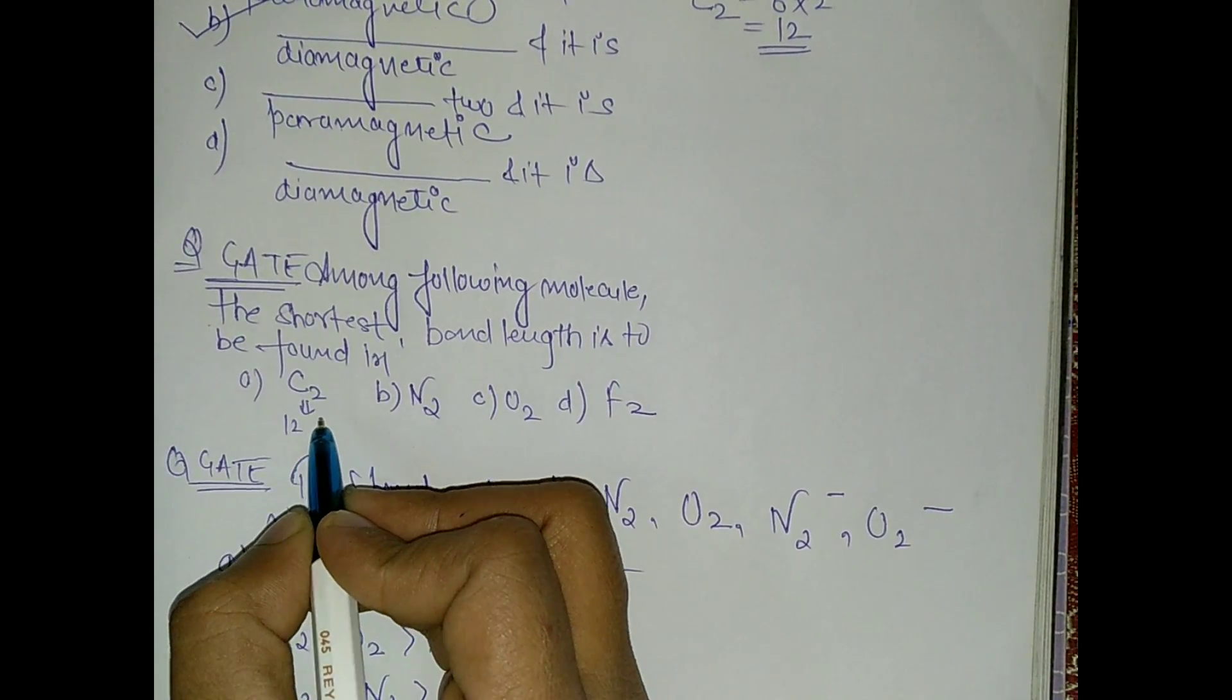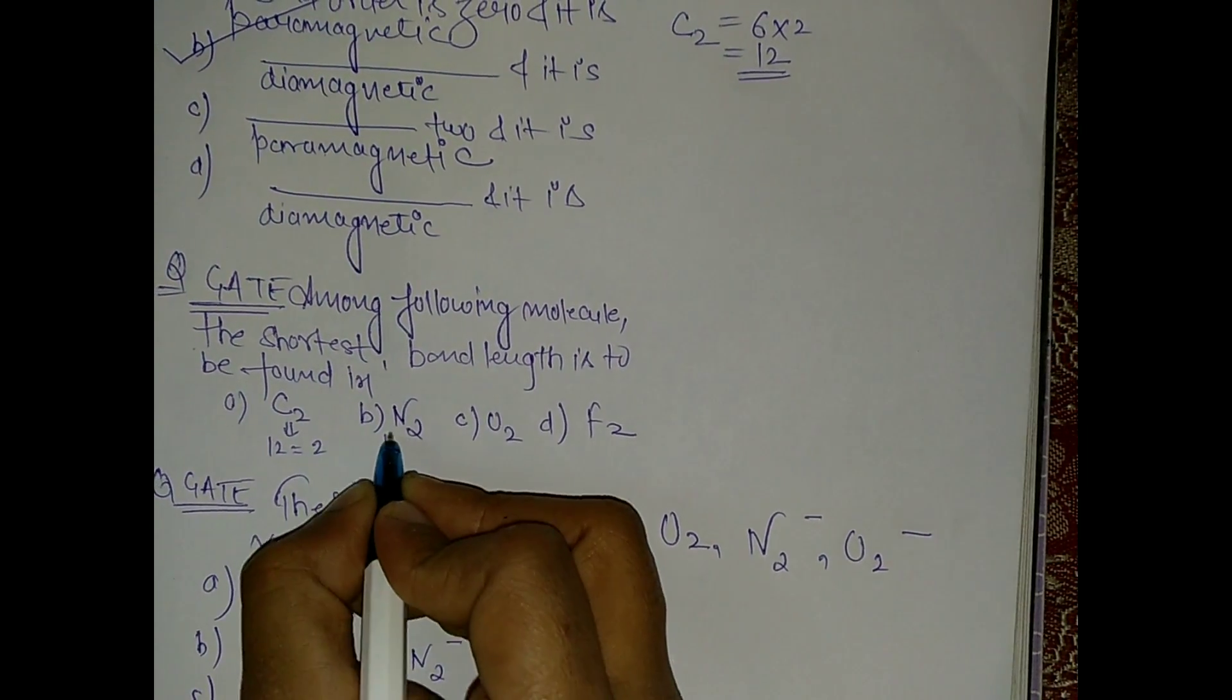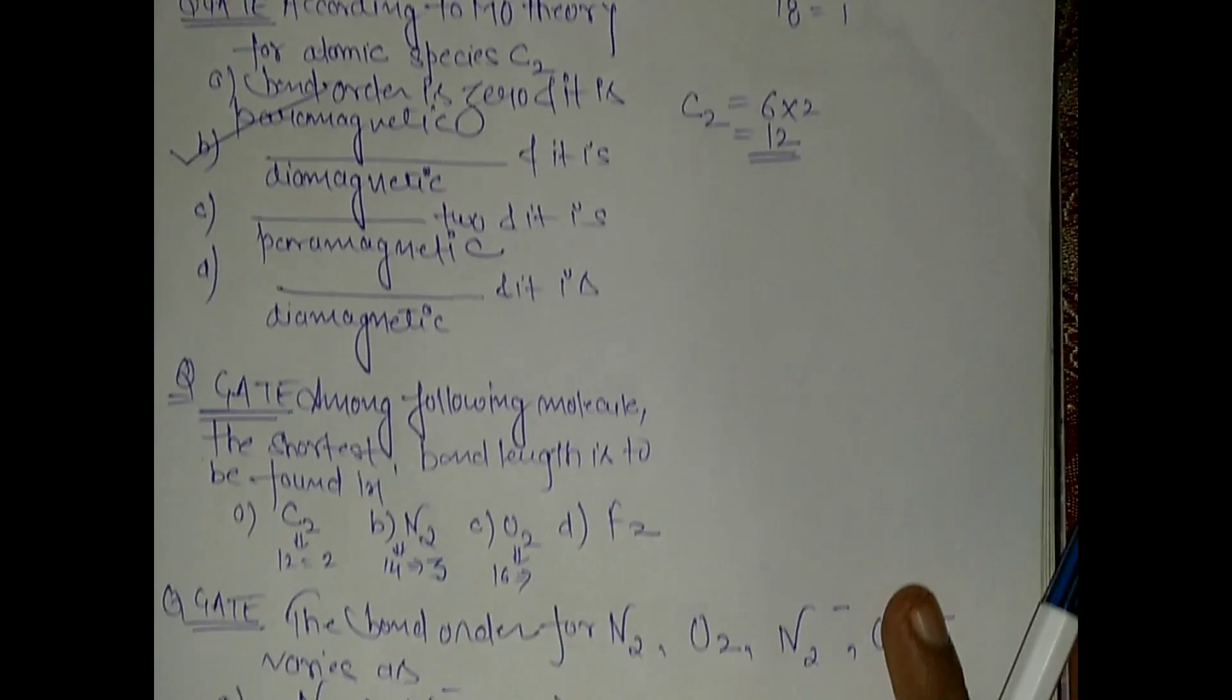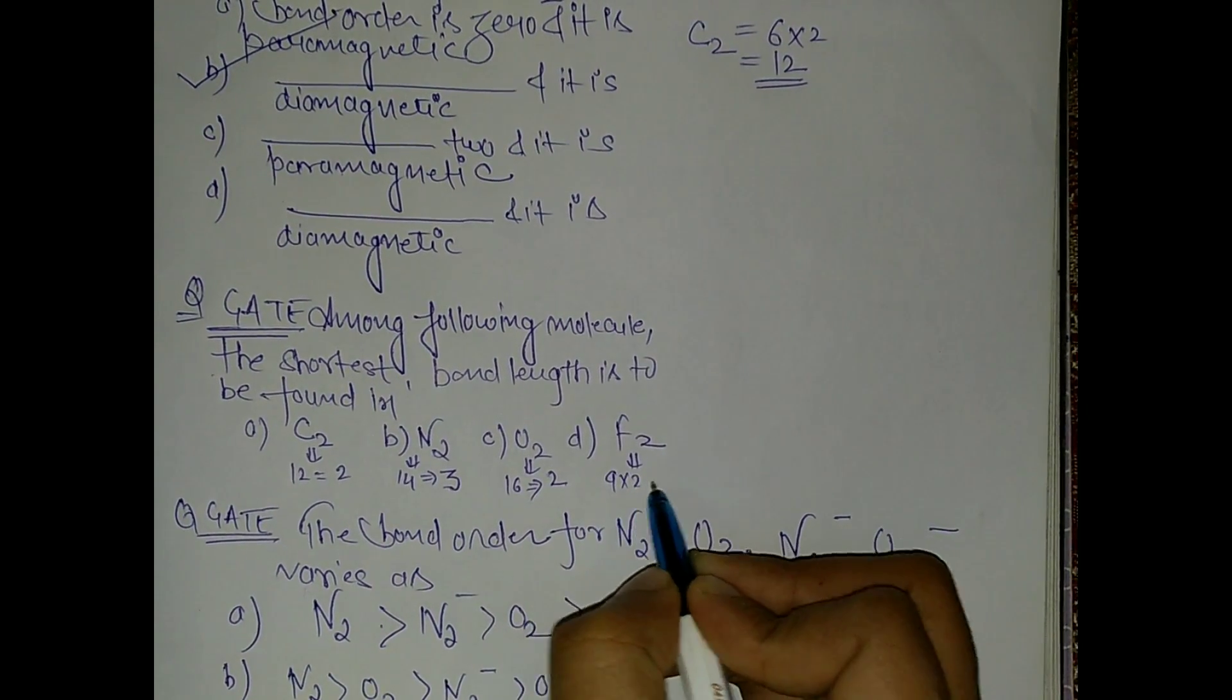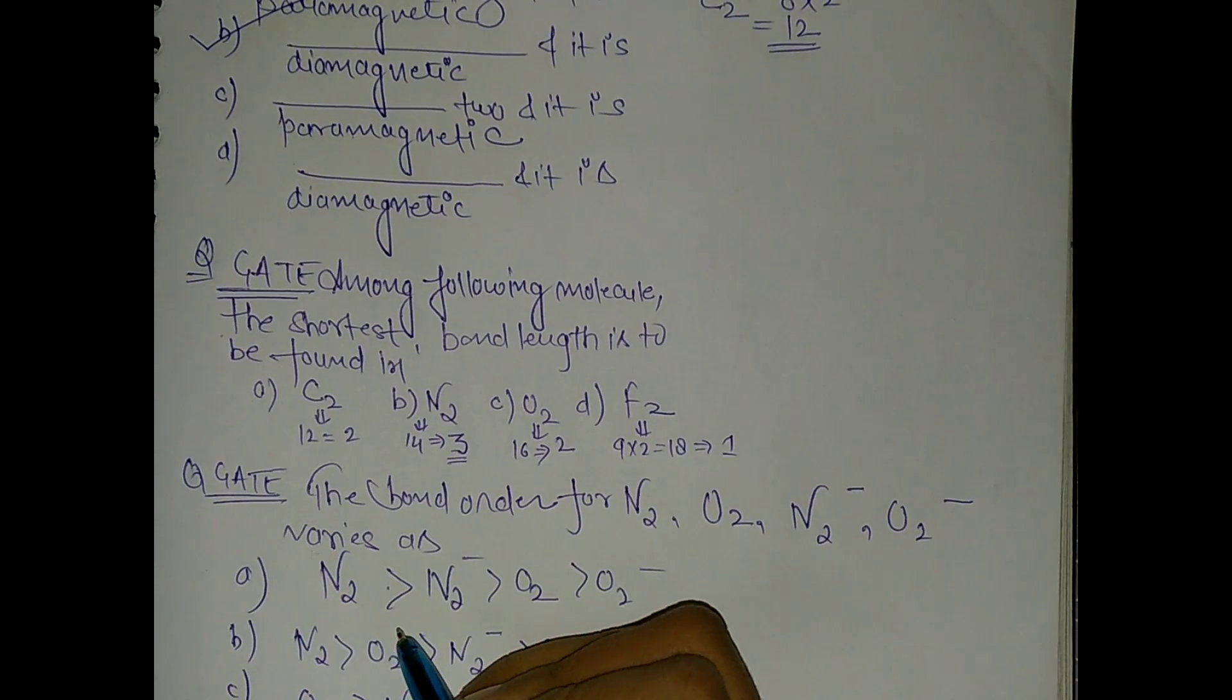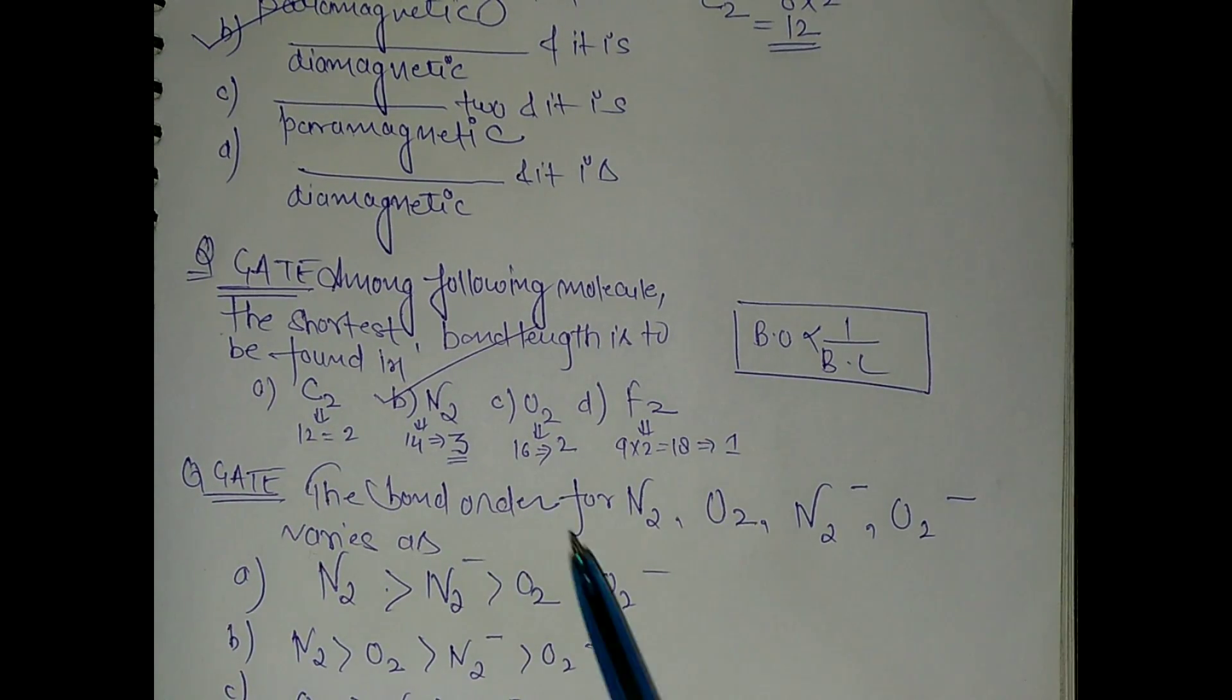Now see, this is C2, this is 12, and we just calculated 12 means bond order is 2, so just write here 2. And N2, we have 14, and 14 means we have bond order 3. O2 means this is 16, and 16 means 2, so this is 2 bond order. And F2 means 9 into 2 is 18, and 18 means 1. Here we have 1. So the bond order is maximum in this case, nitrogen. And bond order is inversely proportional to bond length, so the shortest will be in option B, N2, because it is triple bonded.